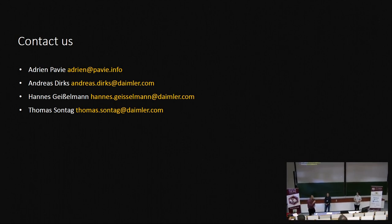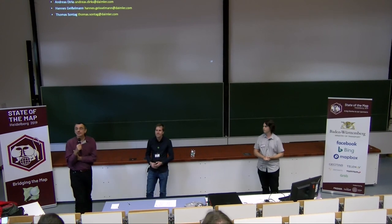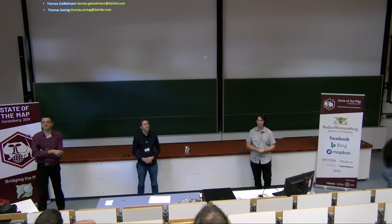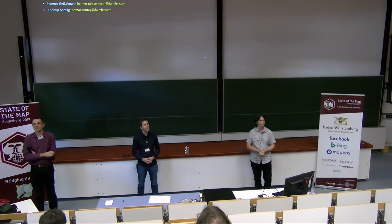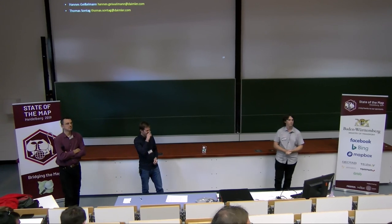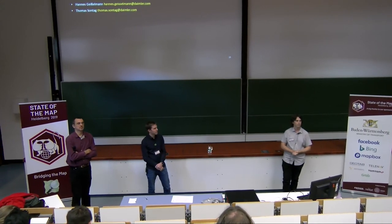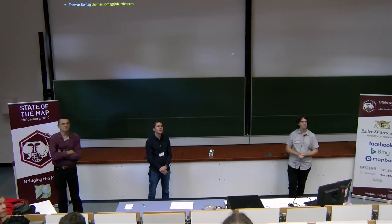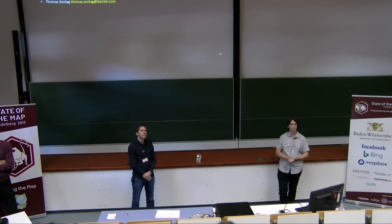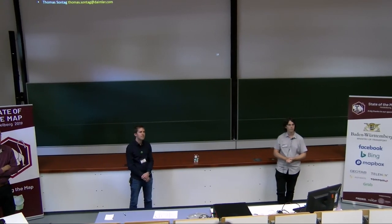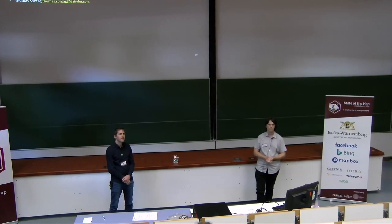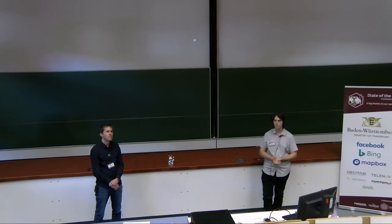Thank you very much. We have ample time for questions. The first question: you mentioned that indoor navigation is difficult without GPS. Is there any provision for using Wi-Fi signals, like competitors do for indoor navigation? Could you track and map Wi-Fi access points into OpenStreetMap, and do you know of any open service that adds that?